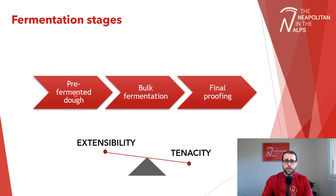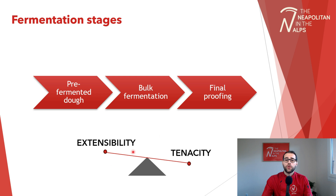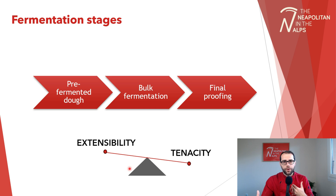During the fermentation stages, this balance will change — and it will change in the right direction if we correctly manage each stage. In particular, fermentation of the pre-fermented dough and bulk fermentation will impact tenacity. Final proofing, on the other hand, will impact extensibility. When we think about Neapolitan pizza — but in general for any pizza — we need to make sure we correctly manage each stage so that gluten reaches the balance needed for our final product.